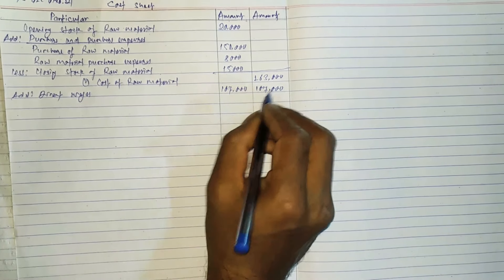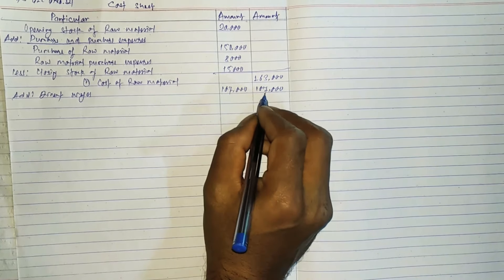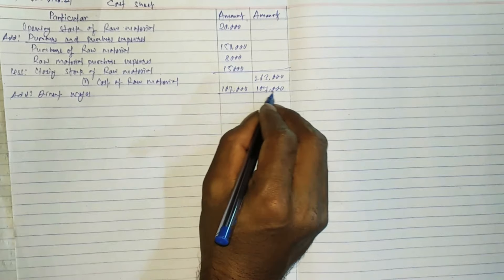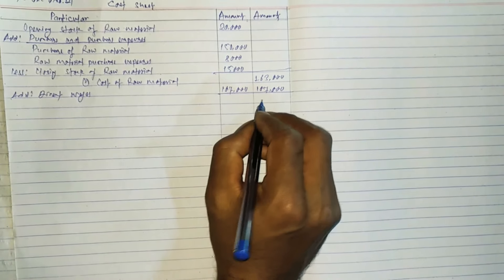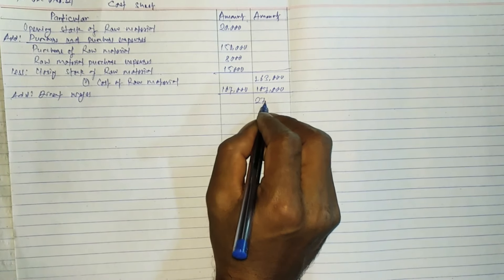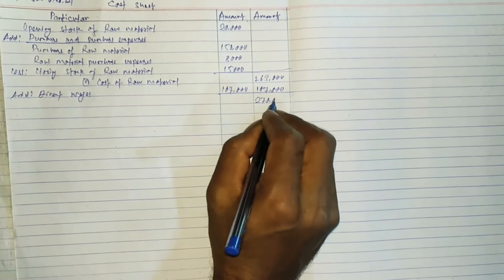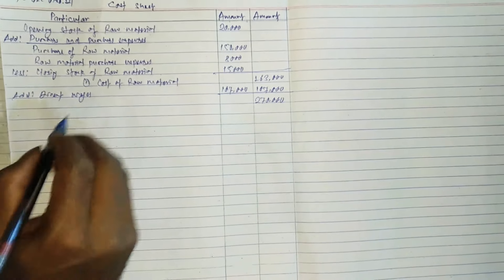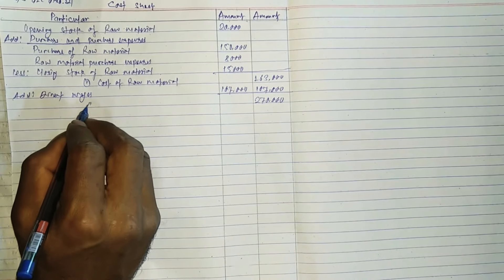Adding these together, the total comes to two lakh seventy thousand. We are going to live on in the prime cost.